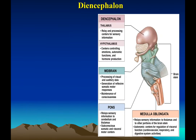Moving on to the diencephalon, which is made up of the thalamus and hypothalamus. The thalamus is also called the switchboard of the brain — all sensory information traveling up the brain passes through the thalamus. It is the relay and processing center of sensory information. Like a telephone switchboard operator directing calls to the right department, the thalamus directs sensory signals to different parts of the brain for processing.